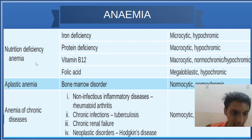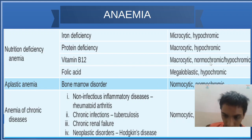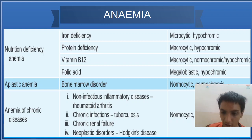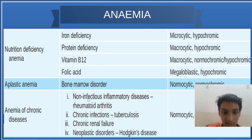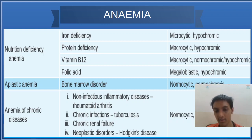Then aplastic anemia, which is a bone marrow disorder — morphology is normocytic normochromic. The same morphology applies for anemia of chronic diseases, though the features are slightly different. Causes include non-infectious inflammations, chronic infections, renal failure, and neoplasia — for example, Hodgkin's disease.